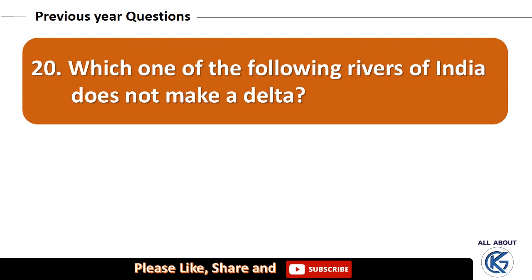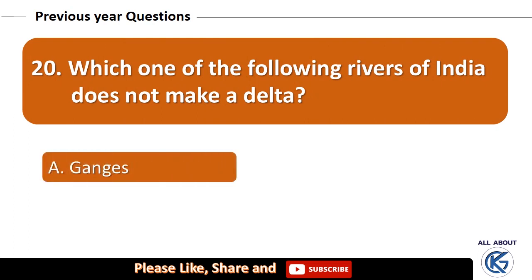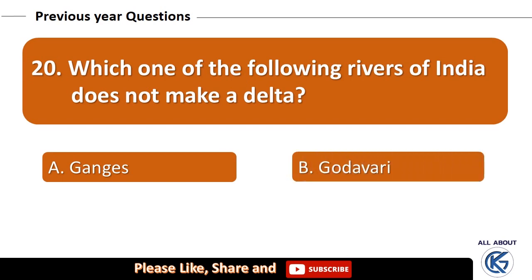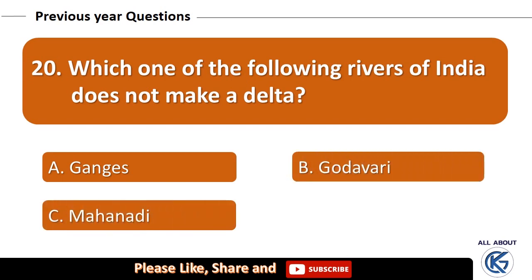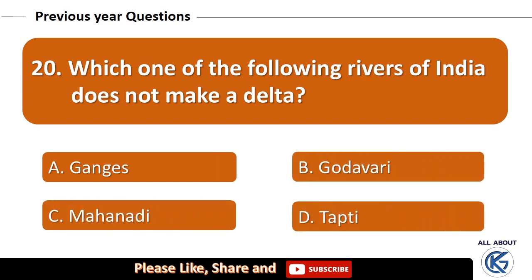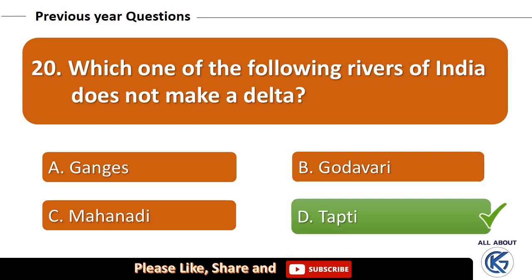Which one of the following rivers of India does not make a delta? Ganges, Godavari, Mahanadi, or Tapti? The right answer is Tapti.